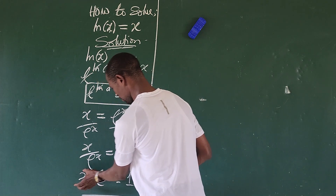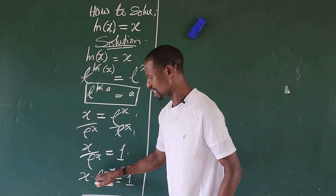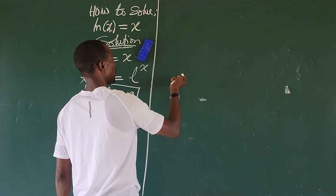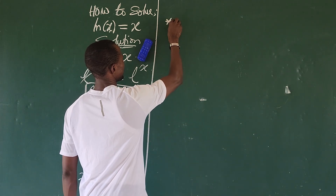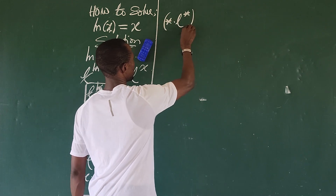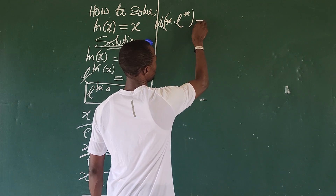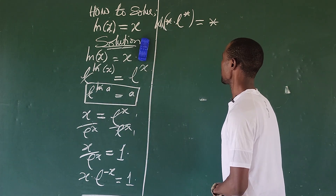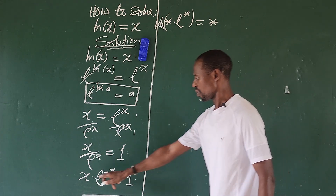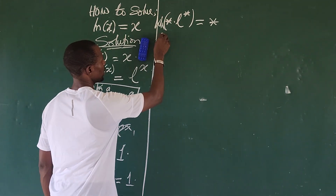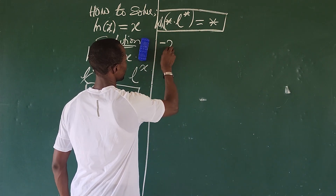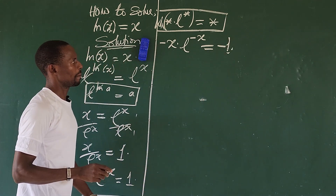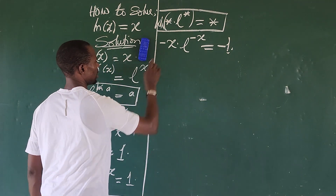Looking at the Lambert W function: it states that if you have a-star times e to the power of a-star, and we take the Lambert W of that, it gives us a-star. But if we look at our expression, we have a-star at the base and a-star at the exponent, but the signs don't match. So we multiply both sides by minus one, giving us minus x times e to the power of minus x equals minus one.